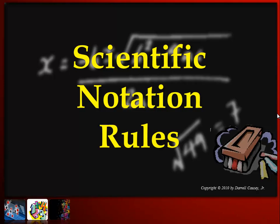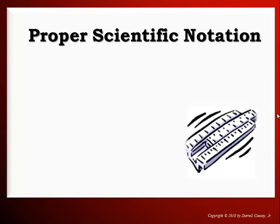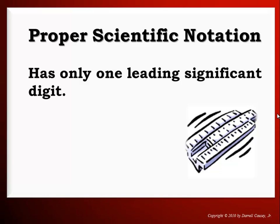Here's some rules we can go over to see what is proper scientific notation. Proper scientific notation has only one leading significant digit. Here's a couple of examples, and that's our goal. We move the decimal either left or right to get our one leading significant digit, which you see in red there on the screen.